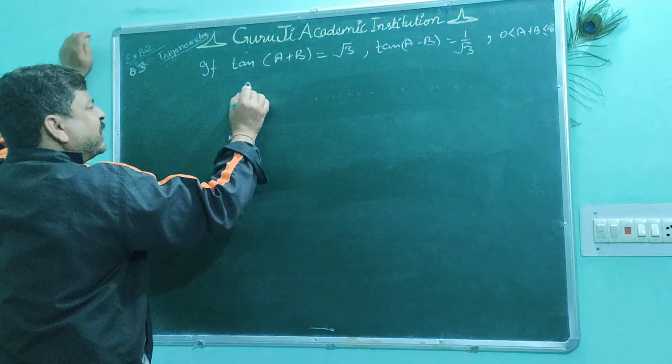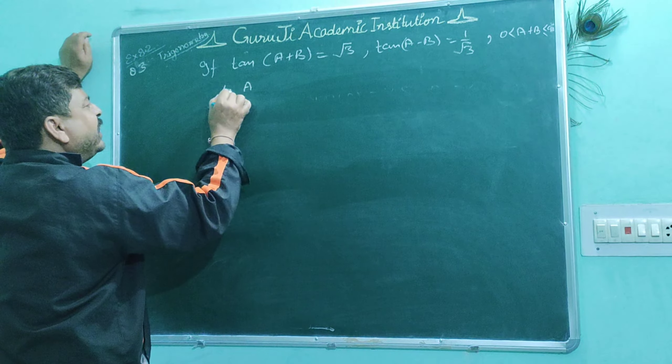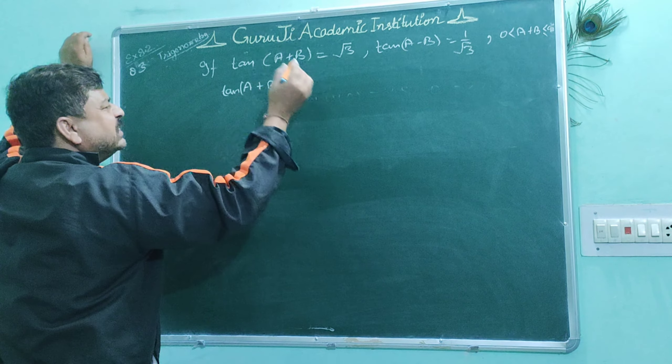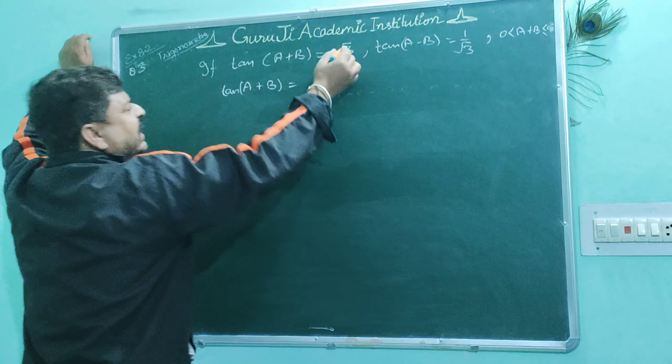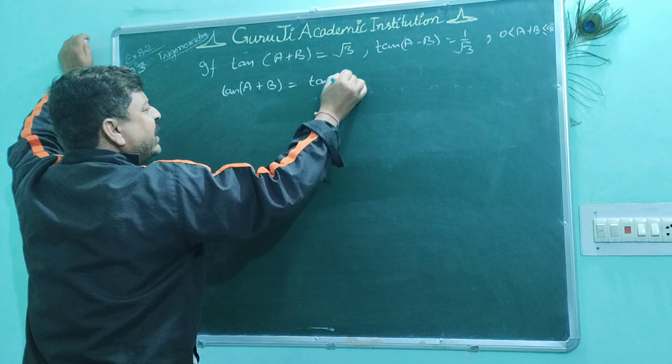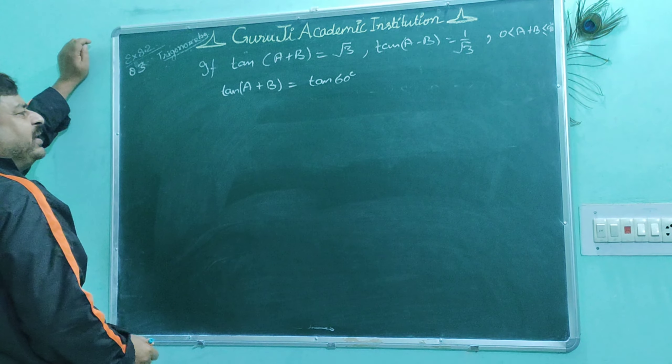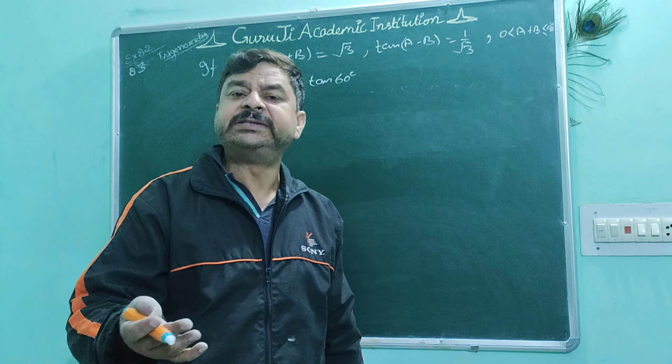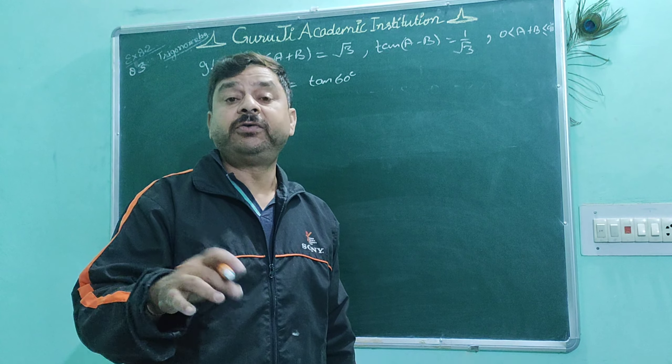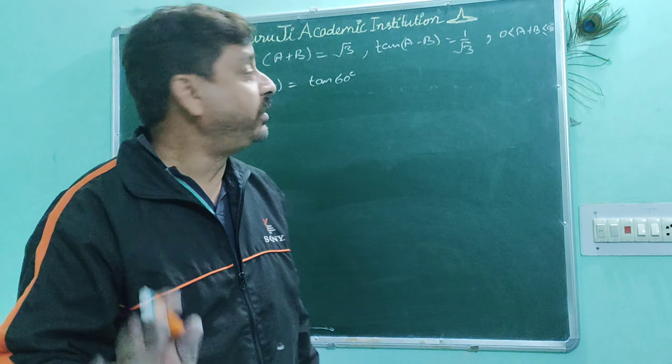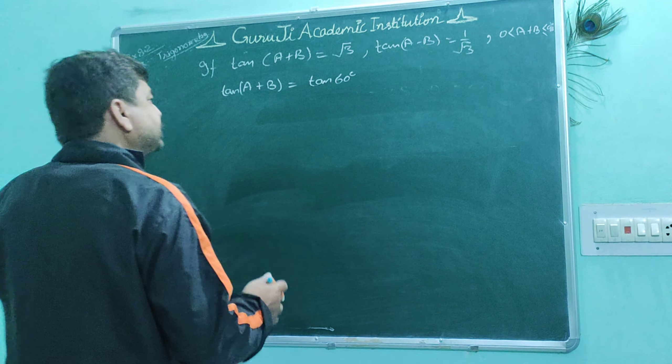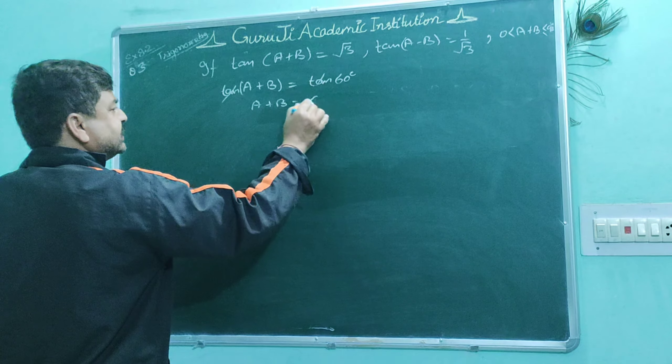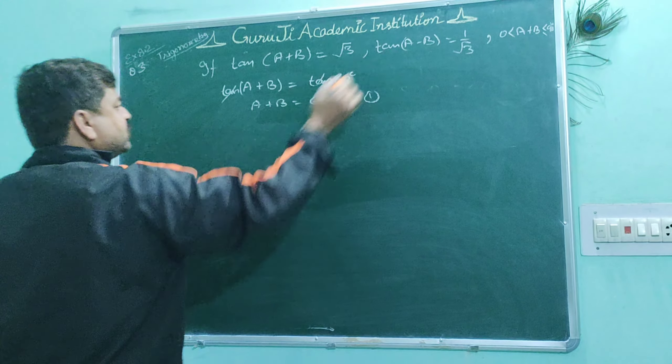First, let's clear this up. We have tan(a+b) and that equals tan 60 degrees, because √3 is tan 60 degrees. So we can write a+b equals 60 degrees. That is equation number one.